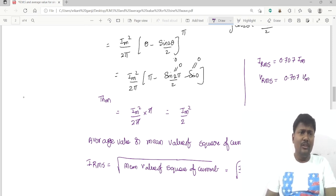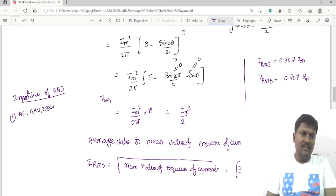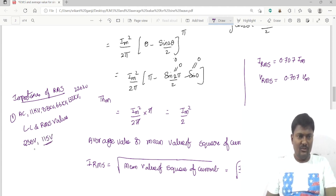What is the importance of RMS value? Generally, AC quantities are measured in RMS values: 11 kV, 33 kV, 66, 132, or 220 kV. All the voltages are line to line and RMS values. Single phase voltage is 230 volts, and 115 volts if it is a 230 volts by 115 volts transformer. These are also called the RMS values.